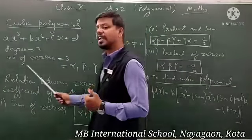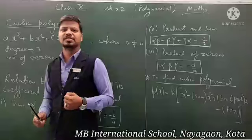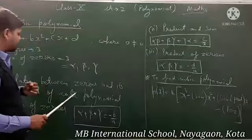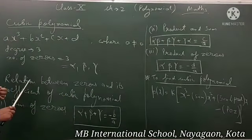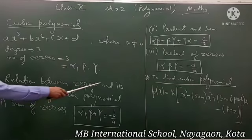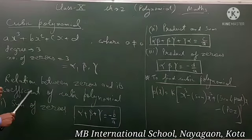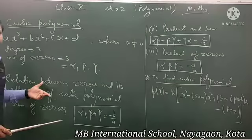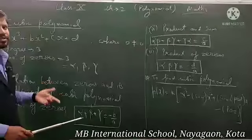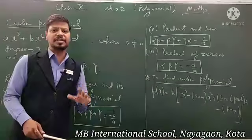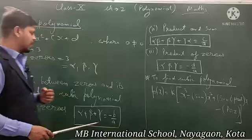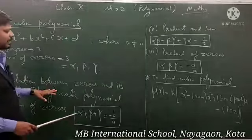Now next topic: relationship between zeros of a cubic polynomial and its coefficients. Relation find karna hai zeros aur uske coefficients ka. Agar aapko koi cubic polynomial di rahti hai, toh uski zeros aur uski coefficients ka relation kya hota hai — abhi aapko pata hai zeros se alpha, beta, gamma teen hote hain.